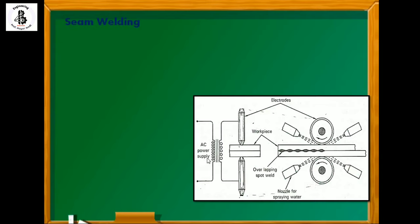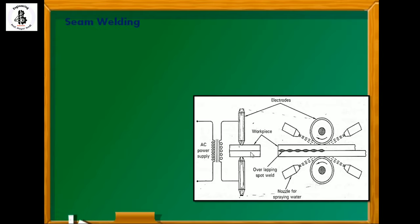In a seam welding process, AC power supply is being used. One of the terminals is connected with a roller electrode. As you can see, this is the front view and this one is the side view. In seam welding, the point electrode is replaced by a roller electrode made of conductive materials. The upper roller electrode is movable and the lower electrode is fixed, so you can easily adjust both rollers with respect to the different thickness of the workpiece.